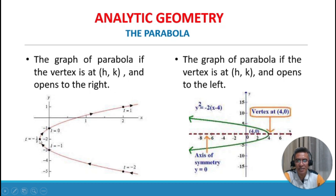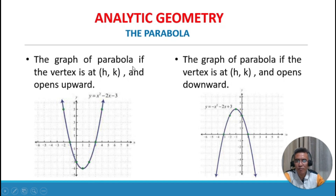When the vertex is at (h, k) and the parabola opens to the right, the focus is inside the parabola. If the vertex is at (h, k) and opens to the left, the axis of symmetry is along the x-axis where y equals zero. The parabola can also open upward or downward with vertex at (h, k).